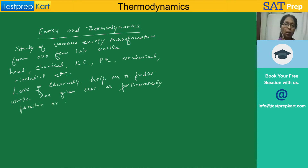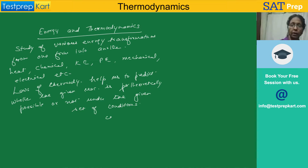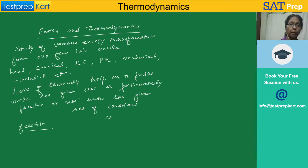Under the given set of conditions. A reaction may not be possible under some conditions, but under other conditions it may become possible. Laws of thermodynamics will help us to predict whether the reaction will be feasible or not feasible under the given set of conditions. In chemistry we use the word 'feasible.'